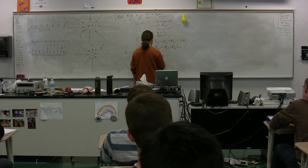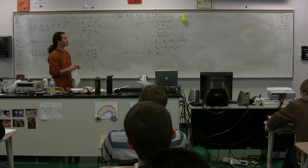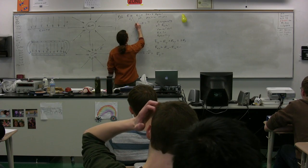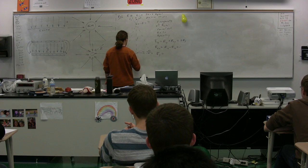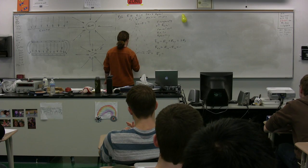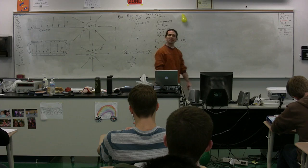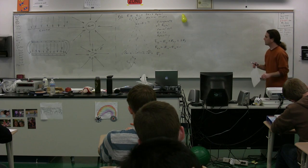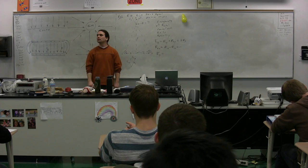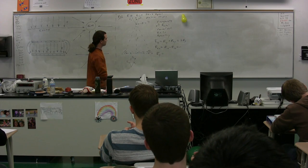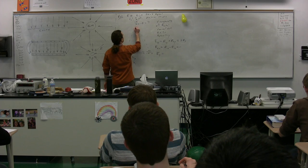So the electric field total is going to be equal to two times the electric field in the y direction, because E1y and E2y are both going to be the same. We're given a and y, so we can use geometry. We've got electric field one in the x direction and electric field one in the y direction. We'll call the angle theta — and that angle is also going to be theta on the other side.